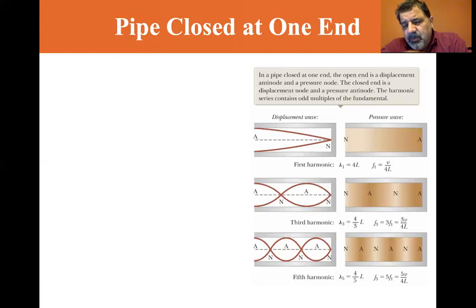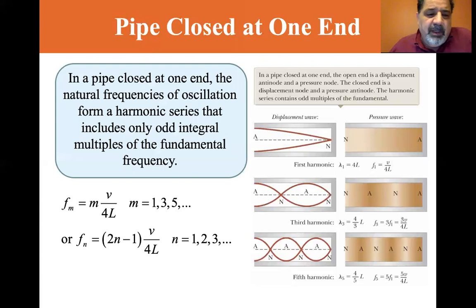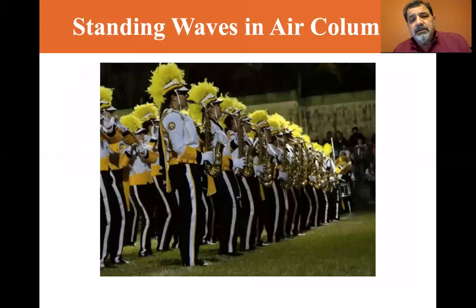In the pipe closed at one end, the natural frequencies of oscillation form a harmonic series that includes only odd integral multiples of fundamental frequency. So f sub m is equal to m times the velocity over 4L, where m is equal to one, three, five. Or f of n is equal to 2n minus 1 times v over 4L, where n is equal to one, two, and three.